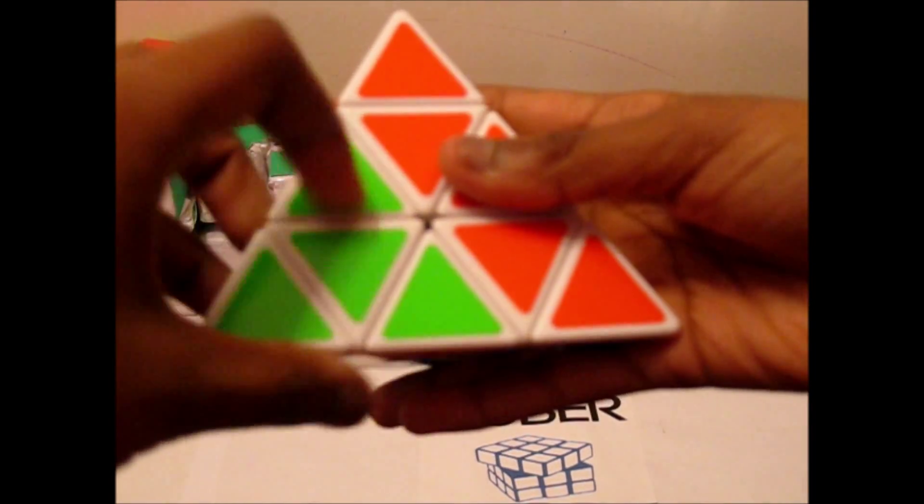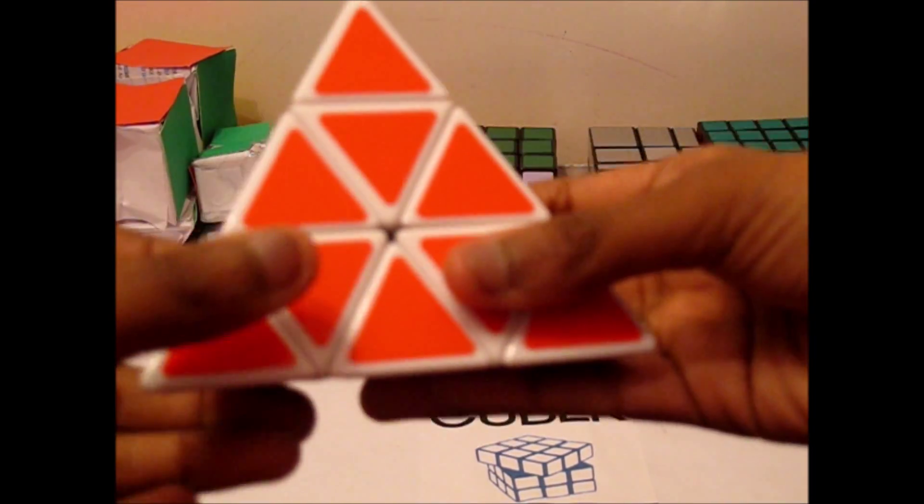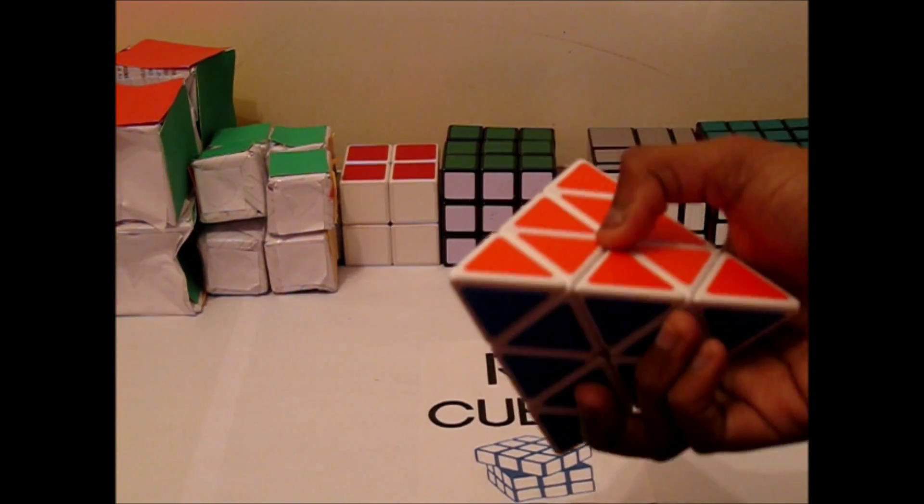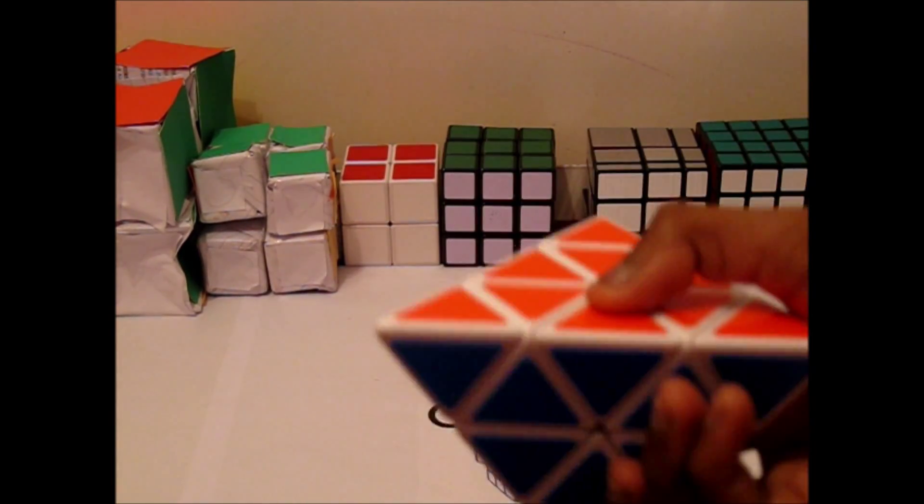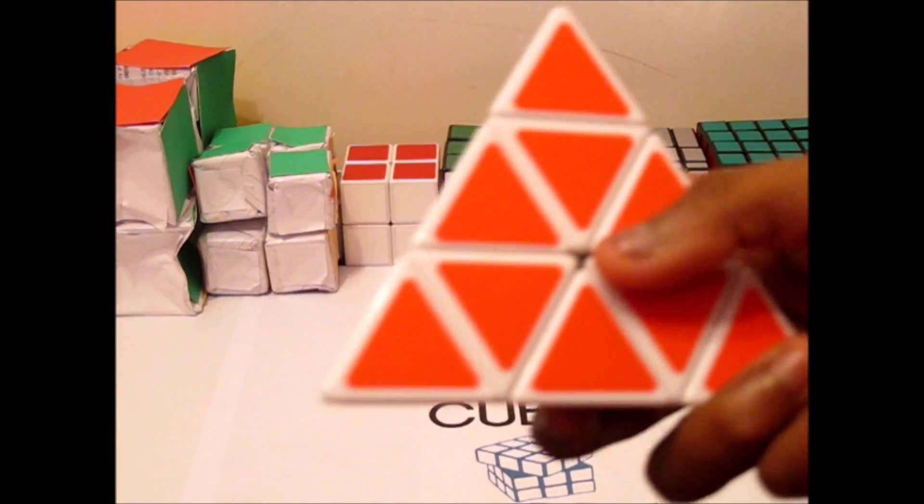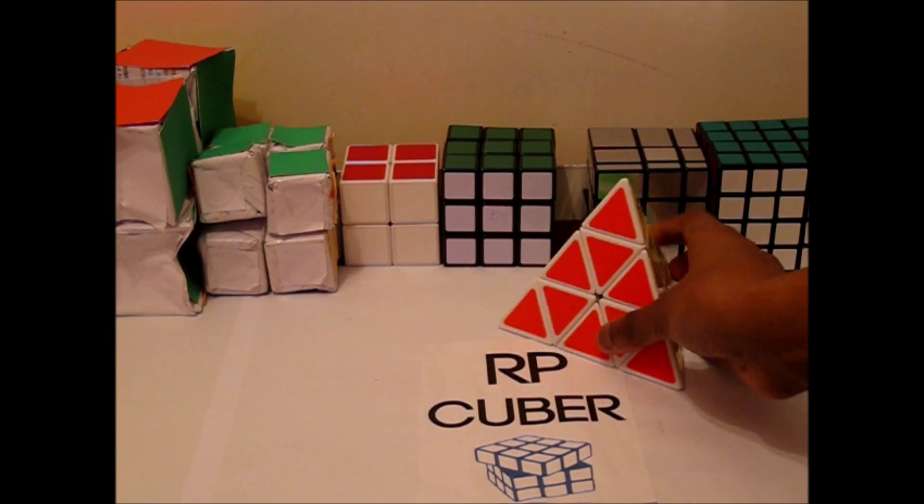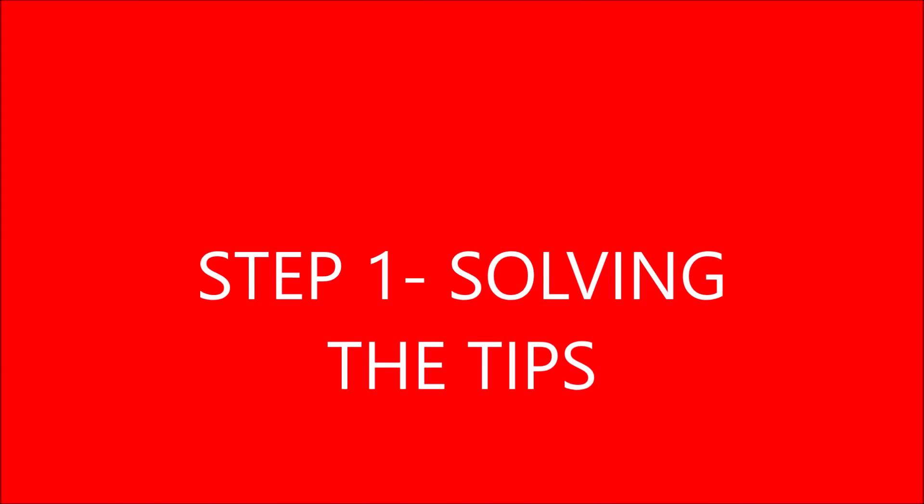You have left clockwise and left counterclockwise, you've got right clockwise and right counterclockwise, you've got up clockwise and up counterclockwise, and then back. But the algorithms I'm going to be showing you won't include the back because it feels a bit awkward trying to do that.